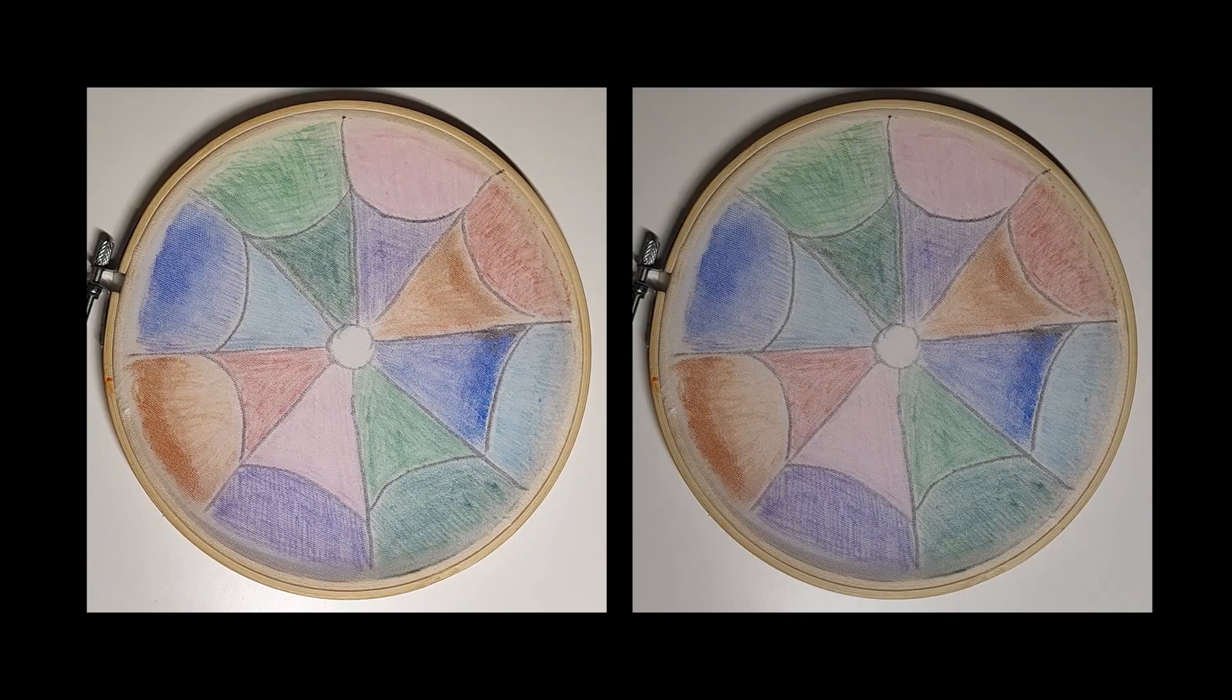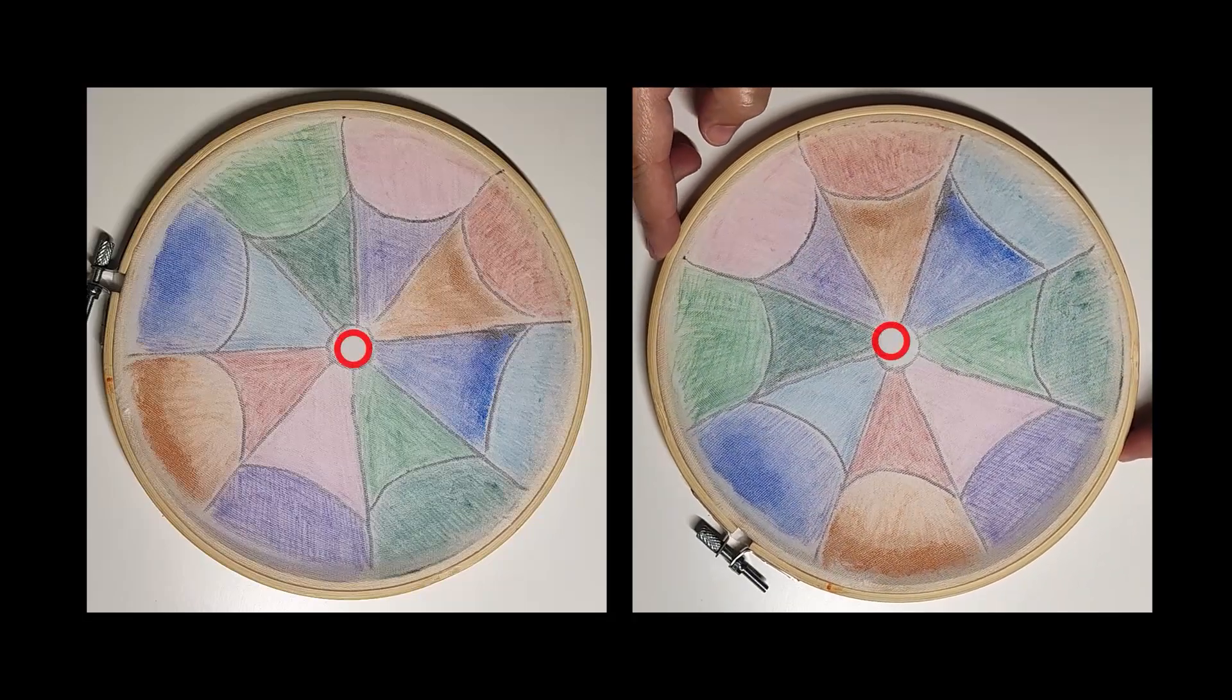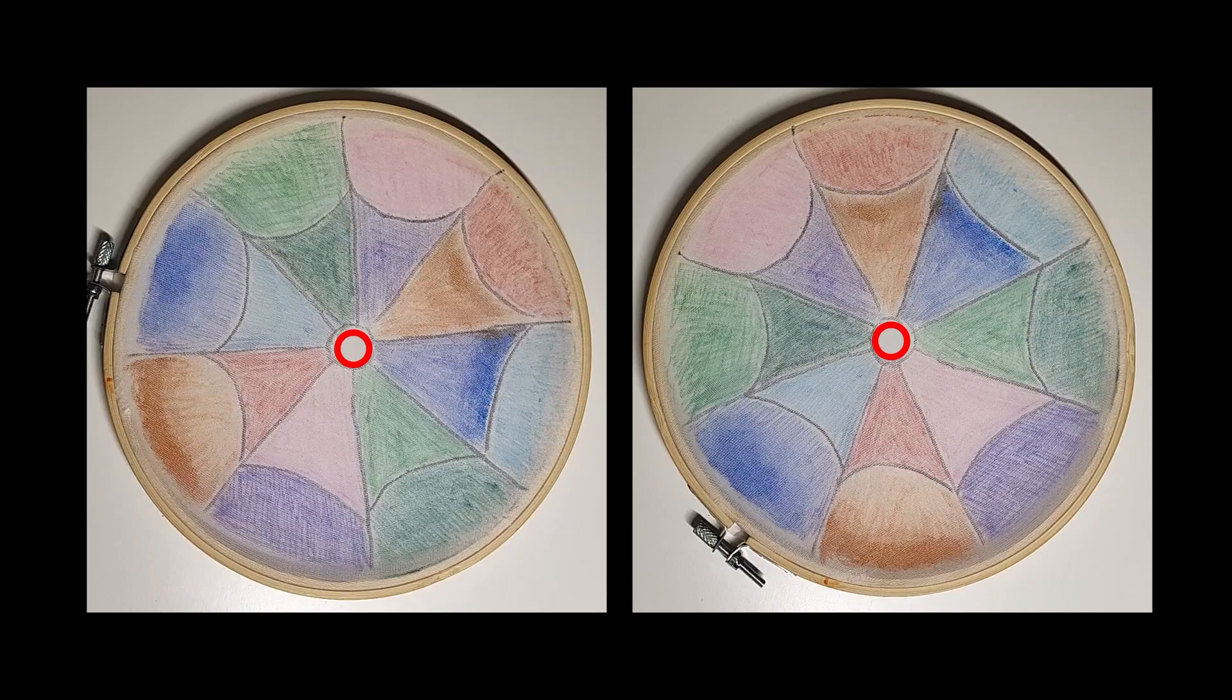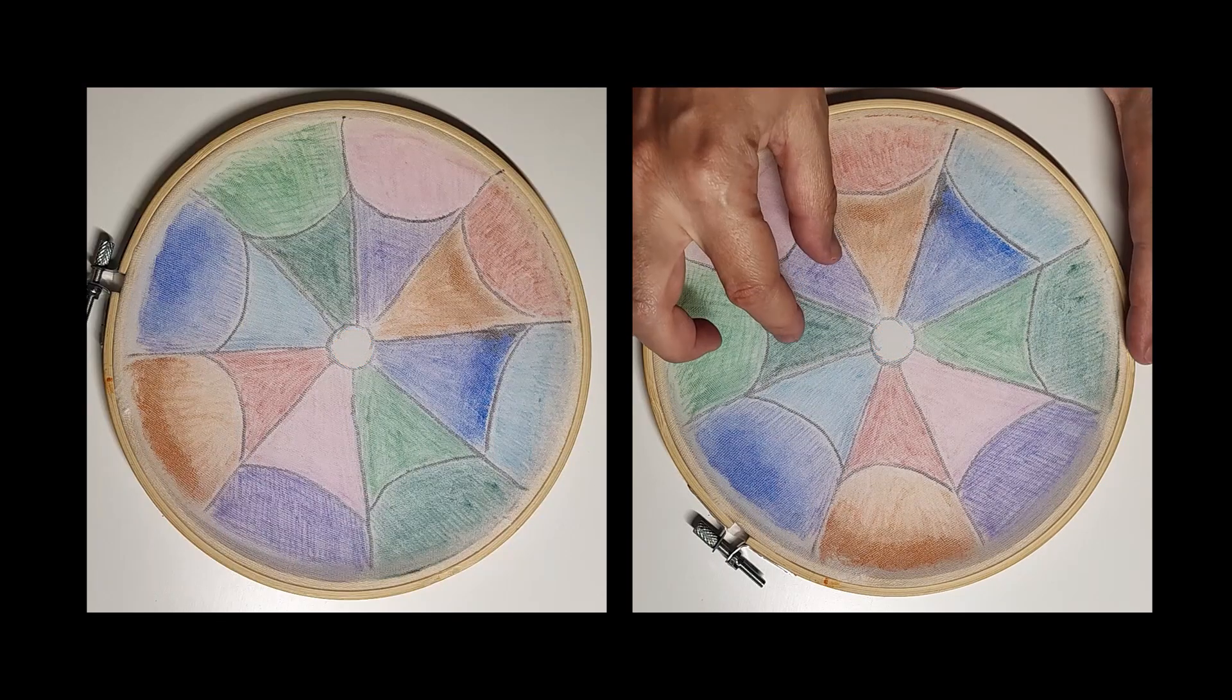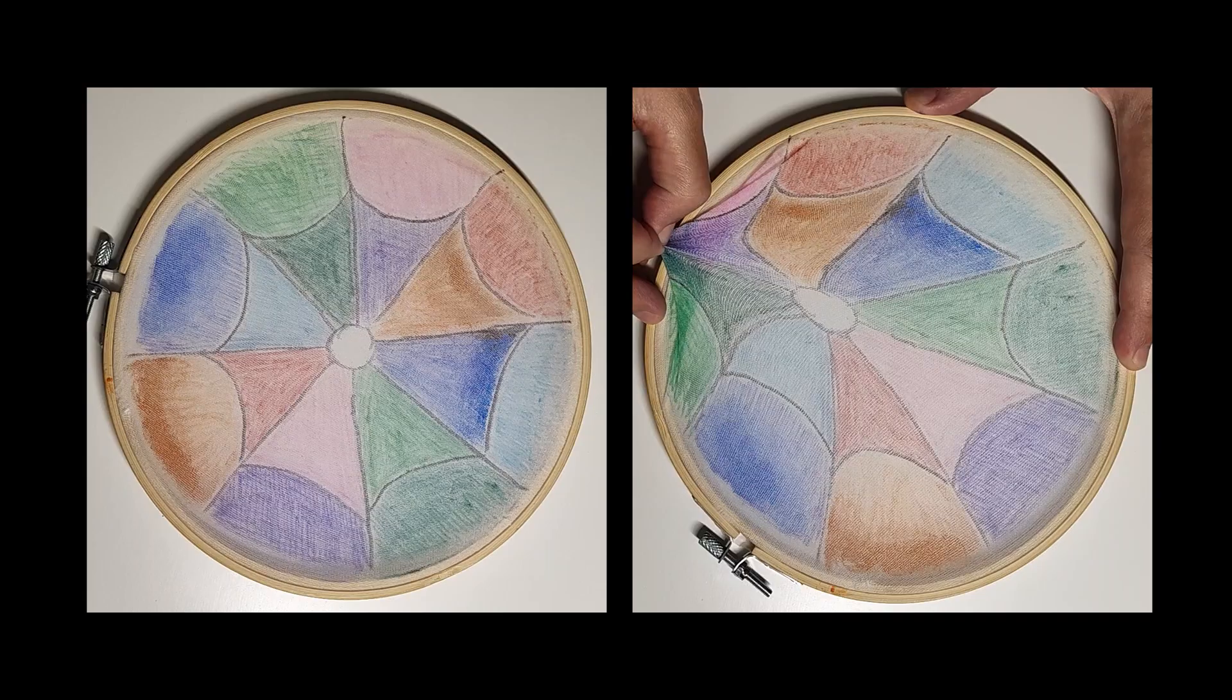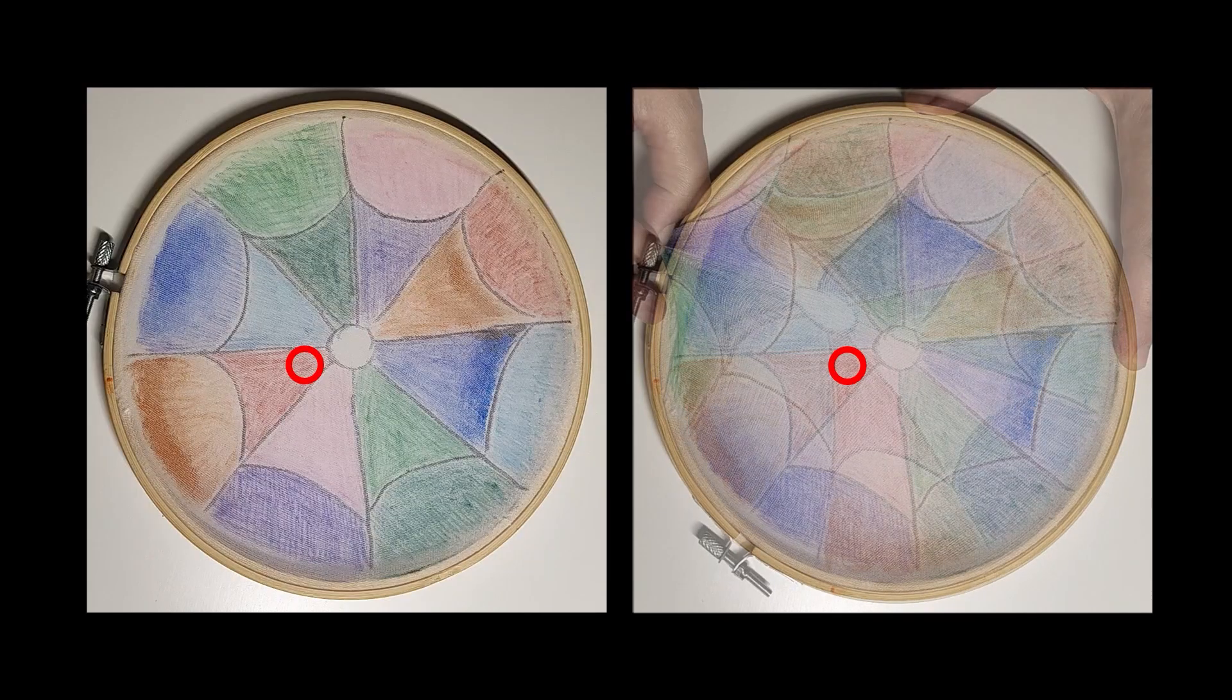After the first rotation, you can see that the area around the center, the fixed point, keeps the same colors as before. Now let's deform the fabric and shift the center. There. With a bit of patience, you can compare this image with the original one and spot a region where the colors haven't changed. The fixed point lies somewhere in that area.